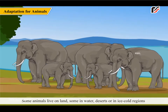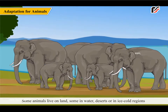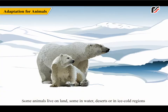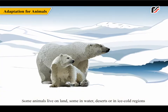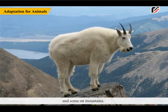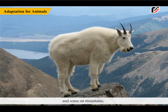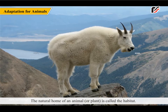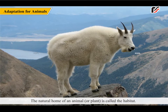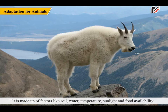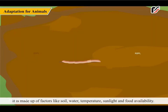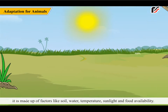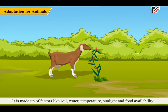Some animals live on land, some in water, deserts, or in ice-cold regions, and some on mountains. The natural home of an animal or plant is called the habitat. It is made up of factors like soil, water, temperature, sunlight and food availability.